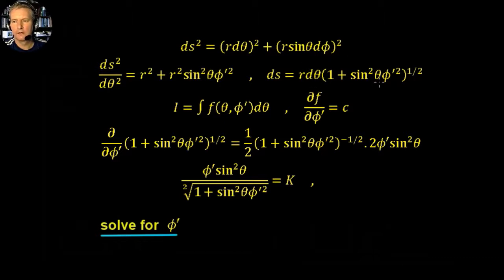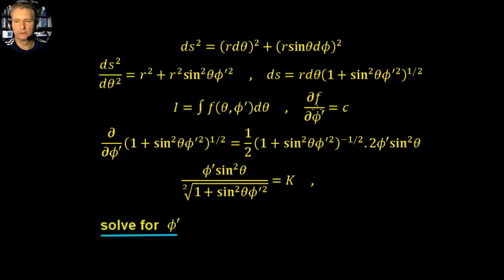When we analyse the functional here, the independent variable is theta. The only thing that's a function of theta is the phi derivative — that's dφ/dθ — because when we divided throughout by dθ, that theta derivative is the only variation here. The only function with dependence on theta is the phi derivative. So from this simplified functional we can use the simplified Euler-Lagrange equation.